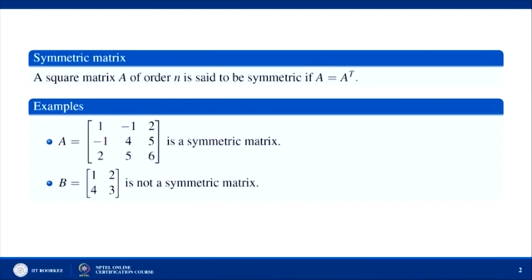The first matrix is the symmetric matrix. A square matrix A of order n is said to be symmetric if A equals A transpose. Transpose means you interchange rows and columns, and if interchanging rows and columns the matrix remains unchanged, then we say the matrix is symmetric. For example, you can see this matrix: if you interchange rows and columns, A transpose is equal to A. If you see this other matrix, these two elements are not the same, so A is not equal to A transpose here, and this matrix is not symmetric.